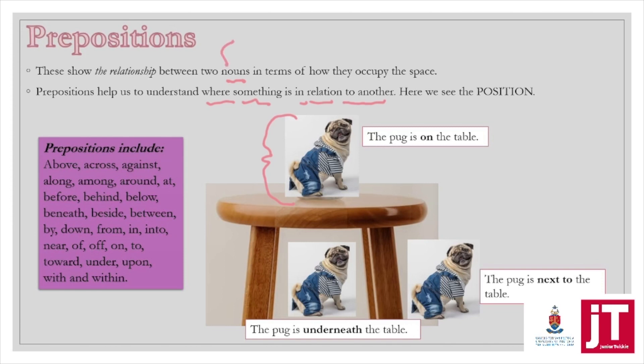Prepositions show the relationship between two nouns in terms of how they occupy the space. Prepositions help us to understand where something is, in relation to another. Here we see the position — a preposition shows us the position of one noun as opposed to another. A noun is a physical thing or an abstract thing — basically something whereby you can use your five senses: taste, touch, smell, hear, and see. That's what a preposition does.